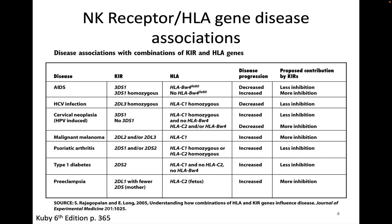One thing that is also of interest about NK cells is that NK inhibitory receptors bind to MHC molecules, which are encoded by the most polymorphic genes in the human genome. NK receptors are also quite polymorphic between individuals. Just like we know there are disease associations between particular HLA types and different diseases, we also see some disease associations with particular NK receptors.